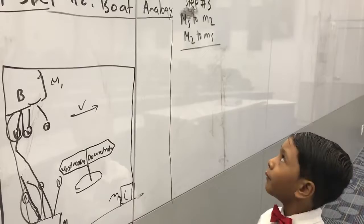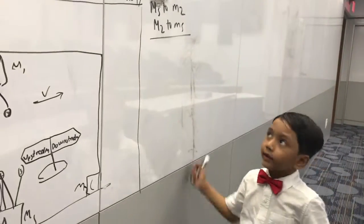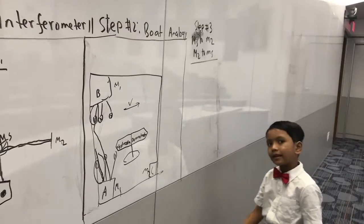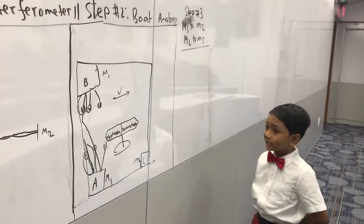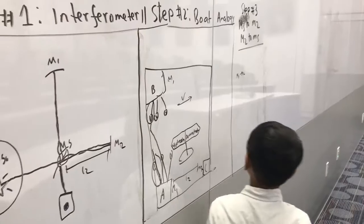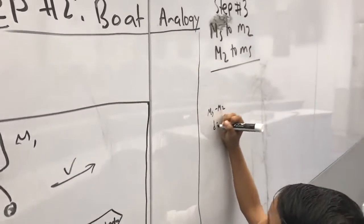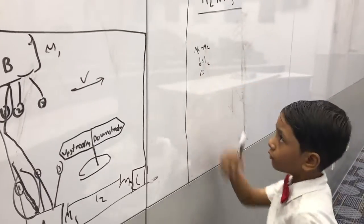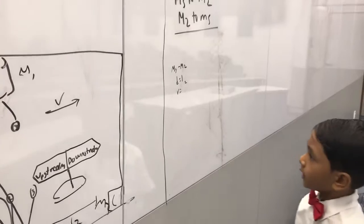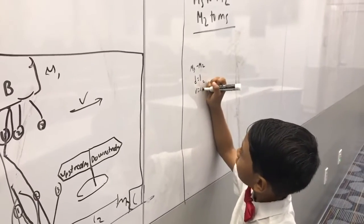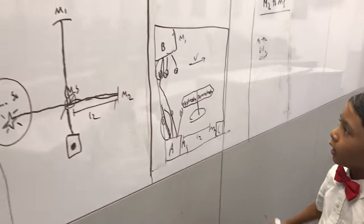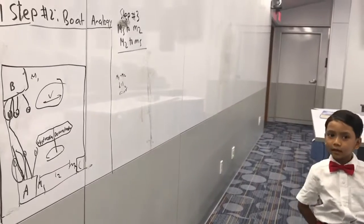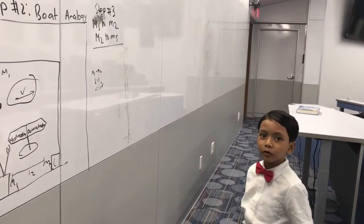Step 3: MS to M2 and M2 to MS. Keep in mind that MS to M2 is downstream and M2 to MS is upstream. So, the distance is L2, and the velocity — since we are going downstream — is C plus V, because the ether fastens you up, like the gravitational assist you get from Jupiter when you pass.